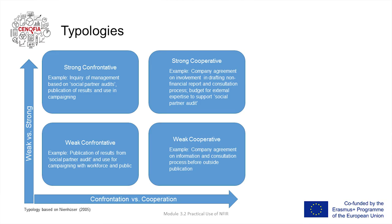These different kinds of power resources are important to keep in mind when looking at the typologies provided in the presentation. On one axis you find weak versus strong, while on the other axis you find the confrontative versus cooperative style. Both have something to do with power resources, because depending on your organizational degree of trade union membership within the company, you might have a weaker or stronger position. And also depending on national legislation or how you are embedded in processes, you might act more confrontative or more cooperative towards management.